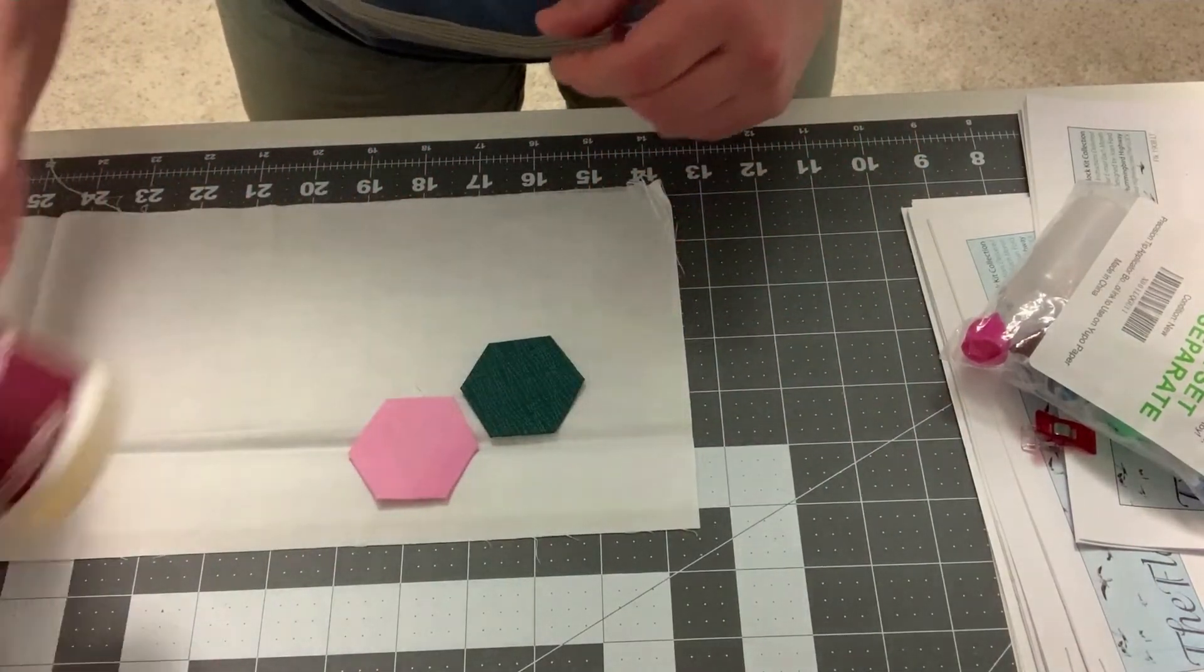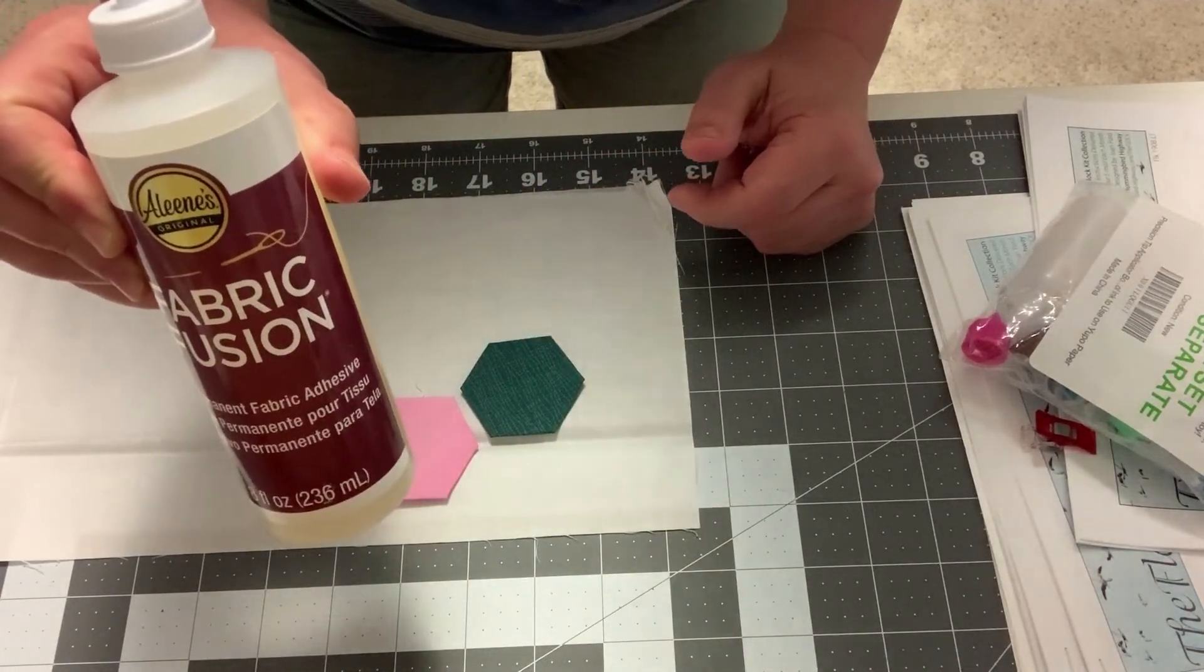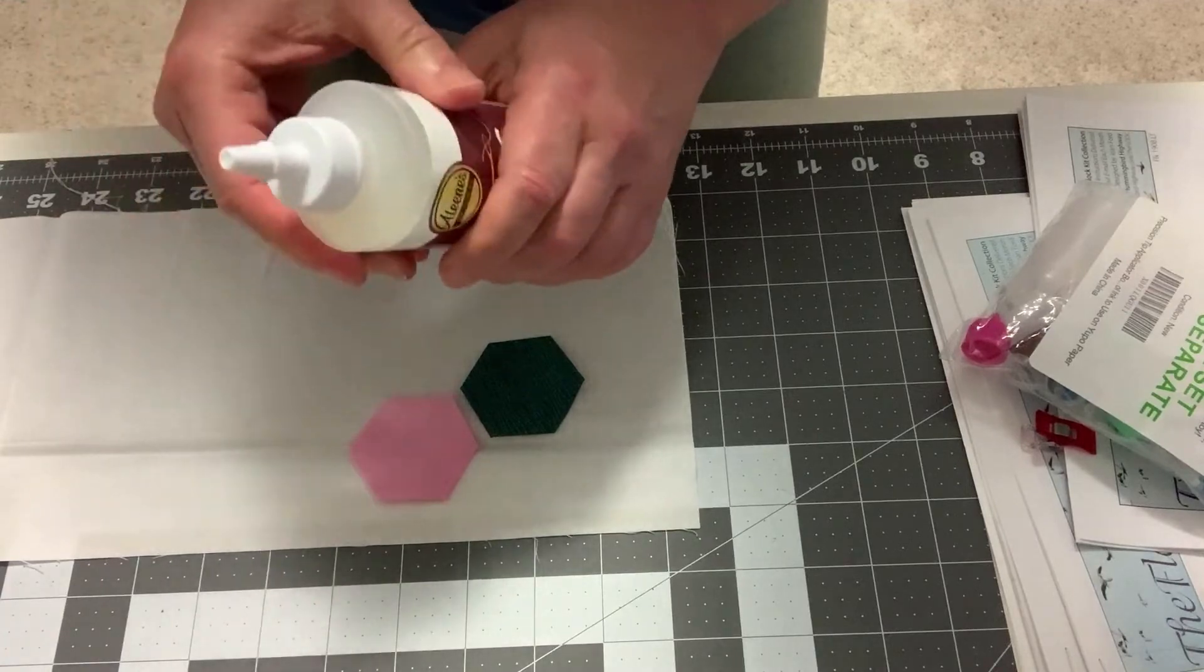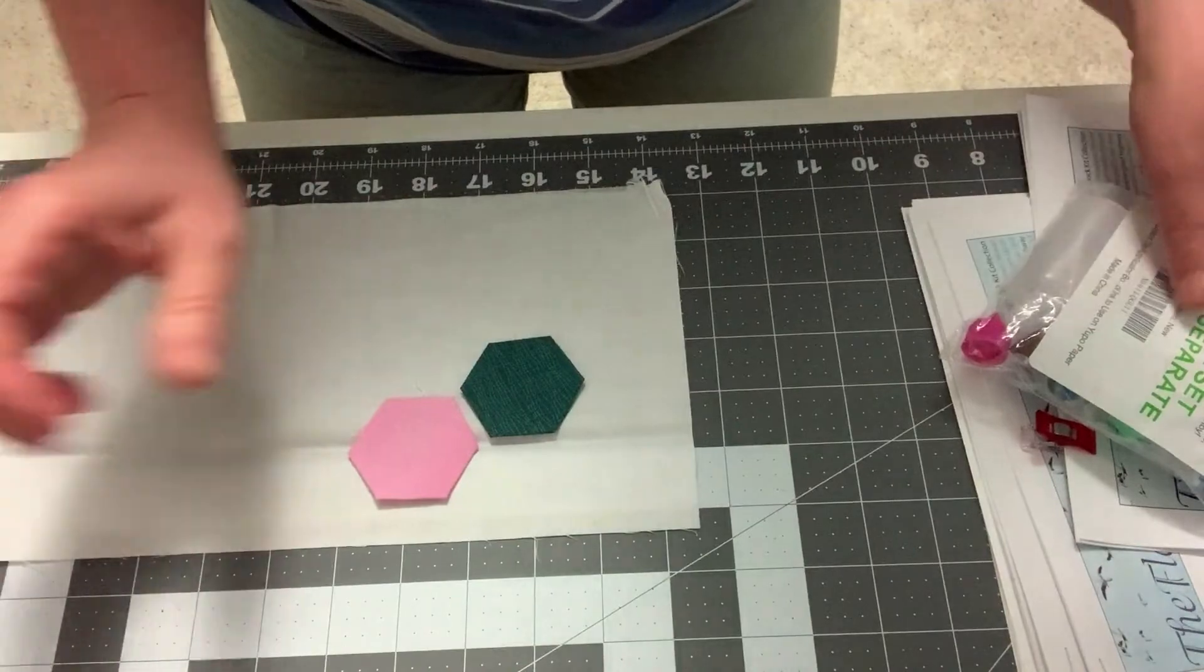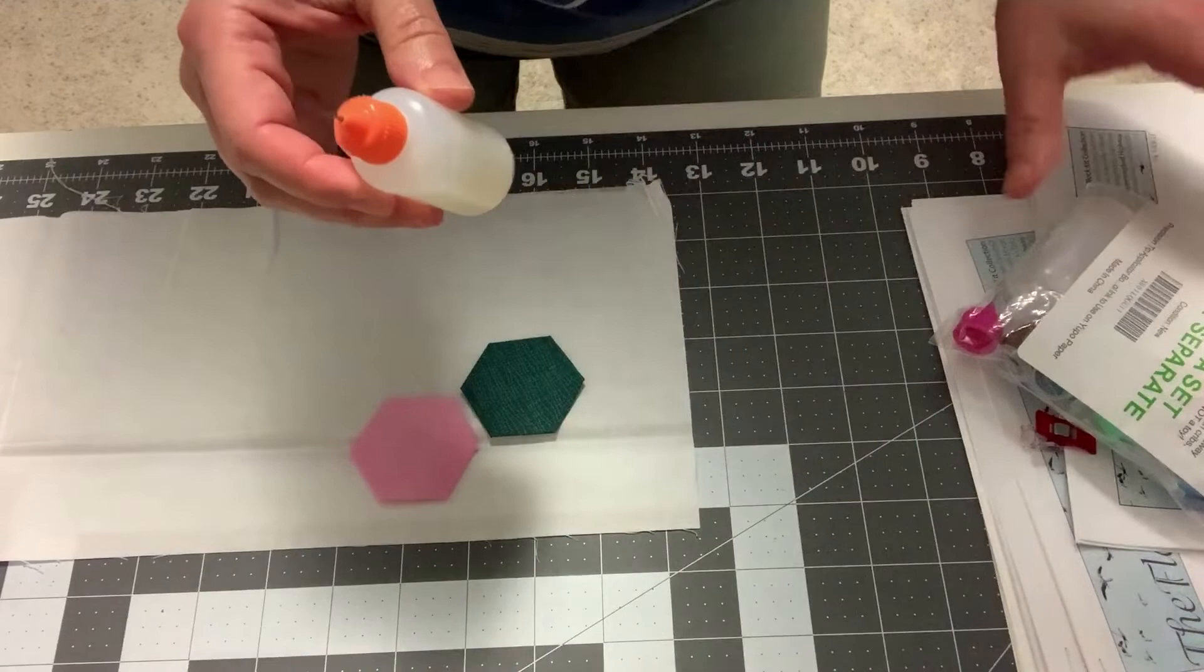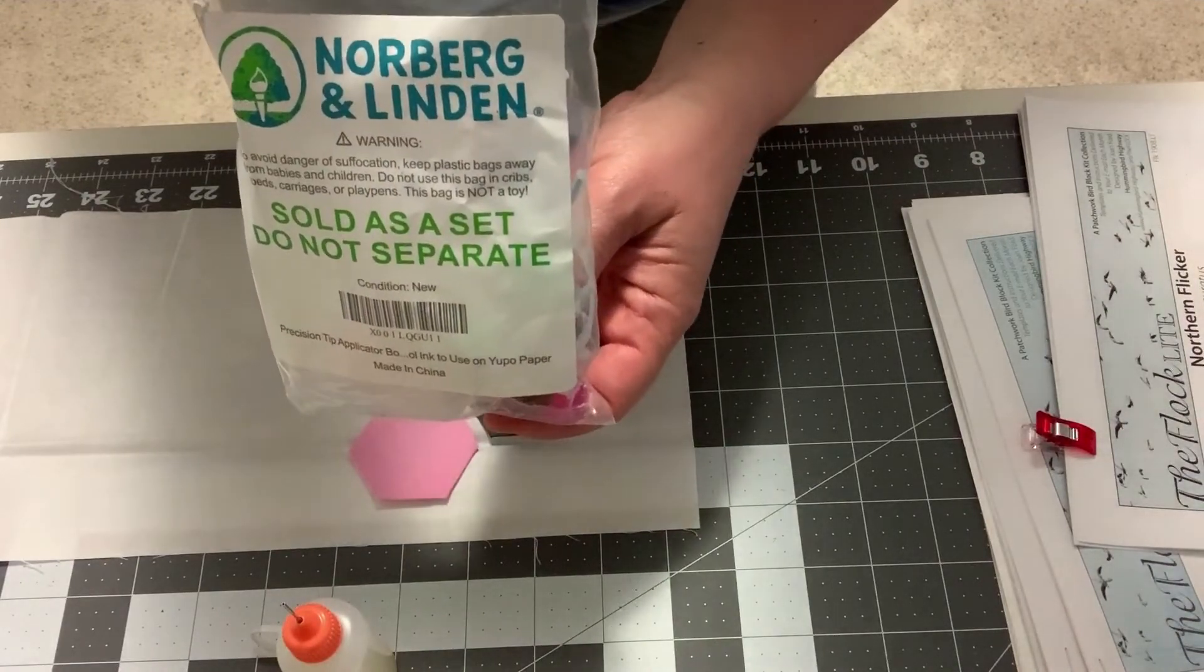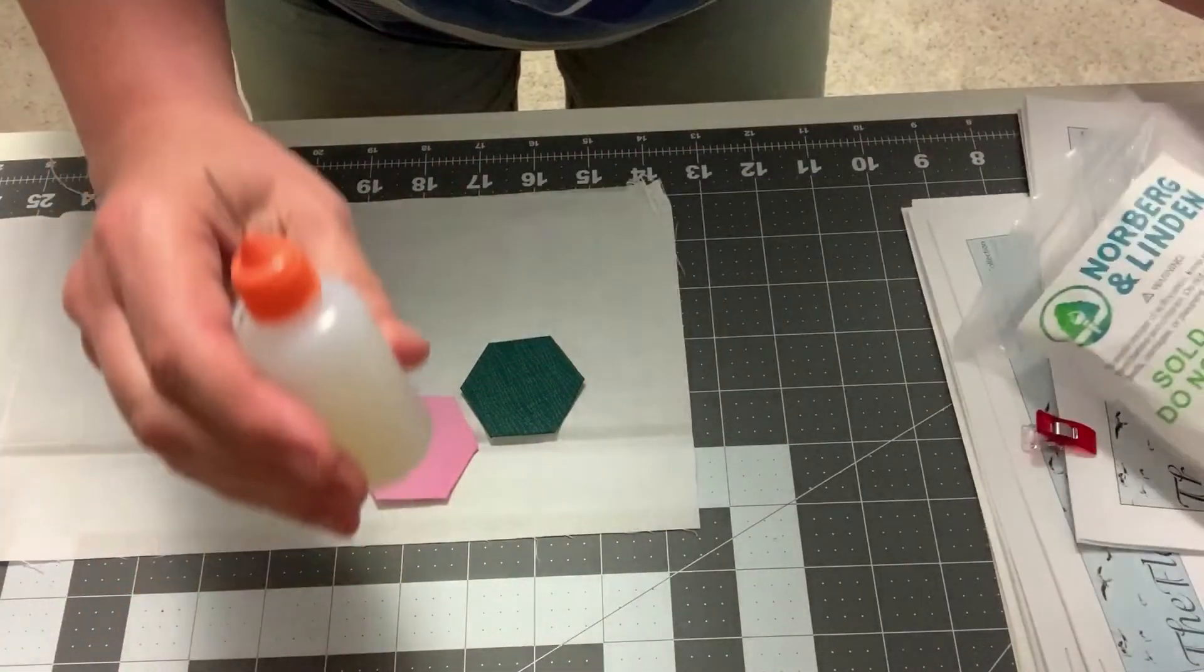And then what I'm going to do is use a fabric fusion glue, and this has a really big tip, which would give me a lot of glue on each piece. So I actually transferred this to a smaller bottle that has a really narrow tip, and I just got this on Amazon, so I'll post a link for that if anybody is interested. But basically, we're just looking for a bottle with a narrow tip.